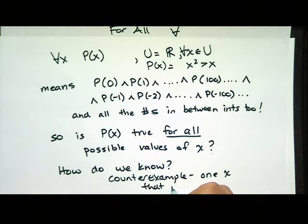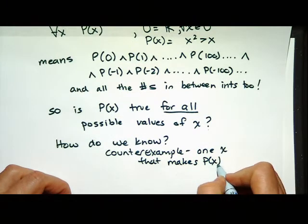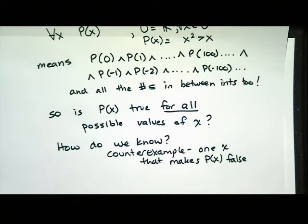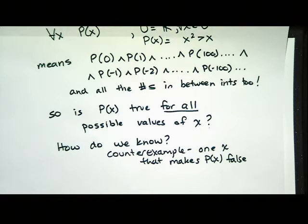For all P of X is shorthand for writing P of 0 AND P of 1 AND P of 2 all the way up, including all negative numbers and all real numbers in between. If you'd like to write out that AND, you're welcome to, but you'll never get done because there's an infinite number of real numbers. That's why we have shorthand. Is P of X true for all possible values of X? No — we already figured that out. If we find a counterexample — one false X that makes P of X false — that's enough to prove that the for all is false.